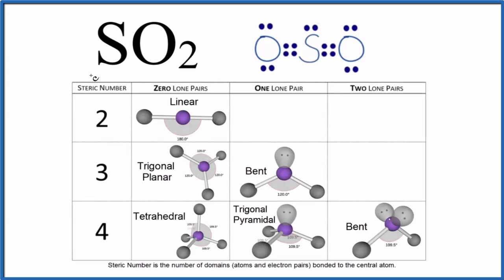Let's take a look at the molecular geometry for SO2, sulfur dioxide. We'll start with this Lewis structure and then use this chart here to figure out the molecular geometry.